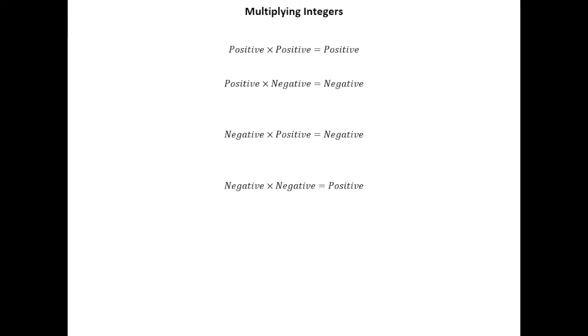In this lesson we're going to talk about multiplying integers. There are really four cases that are possible when you're multiplying two integers. You can either have a positive times a positive, positive times a negative, a negative times a positive, or a negative times a negative. And so we'll explore all four of those.